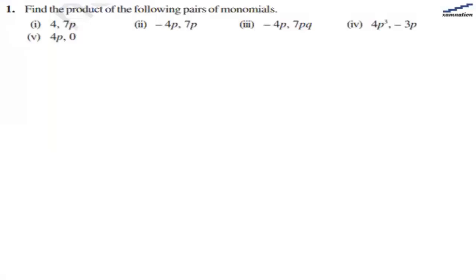In this question we need to find the product of the following pairs of monomials. First, we need to multiply 4 with 7p and that will come out to 28p.